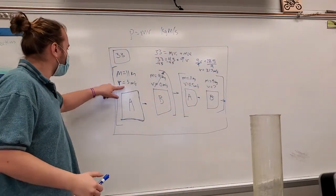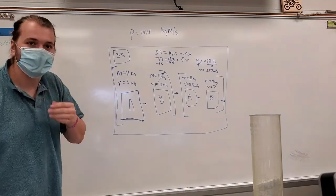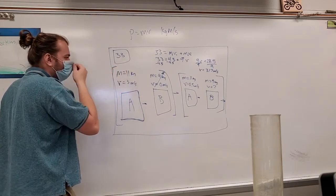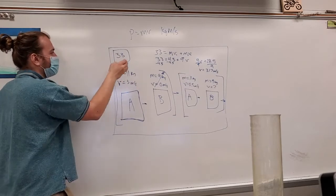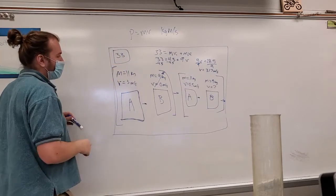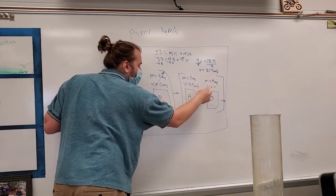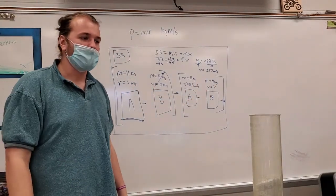Now you're thinking, well, hold on. That's faster than what A was going. Yes, it is. But the momentum, 33, the momentum is the same. So the momentum of before is going to equal the momentum after. The reason it's faster is because this mass is smaller. A smaller mass with the same amount of momentum is going to go faster. Hope that makes sense.